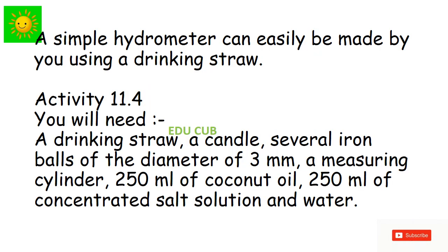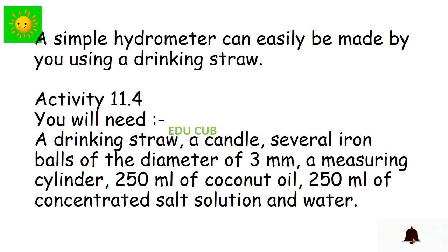A simple hydrometer can easily be made using a drinking straw. You need a drinking straw, candle wax, several iron balls of diameter two to three millimeters, a measuring cylinder, 250 ml of coconut oil, 250 ml of concentrated salt solution, and water.